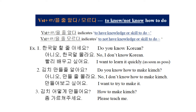Example 2: 김치 만들 줄 알아요? — Do you know how to make kimchi? 아니요, 만들 줄 몰라요. — No, I don't know how to make kimchi. 만들어보고 싶어요. — I want to try to make it. Example 3: 김치 어떻게 만들어요? 좀 가르쳐 주세요. — How do you make kimchi? Please teach me.